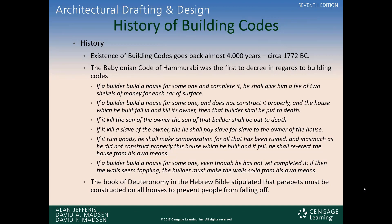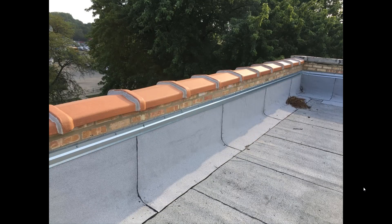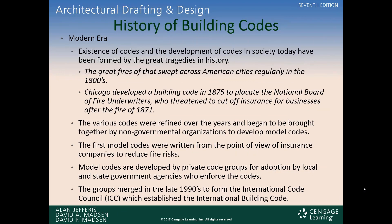If the builder builds a house for someone, even though he has not yet completed it, if the walls seem toppling, the builder must make the walls solid from his own means. So basically an eye for an eye is how the building code went back in Hammurabi's time. The Book of Deuteronomy in the Hebrew Bible also stipulated that parapets must be constructed on all roofs to prevent people from falling. A parapet is typically on a flat roof — a wall that continues up from the main wall of the building, high enough to act as a railing so that you could not fall off the roof.